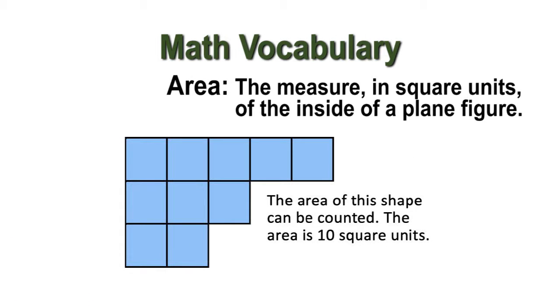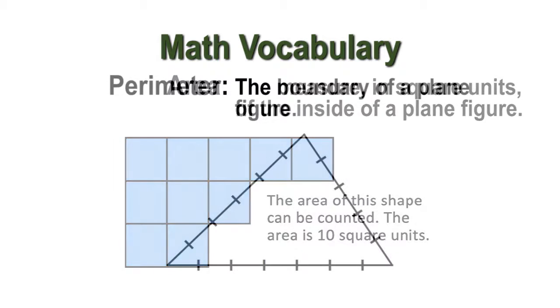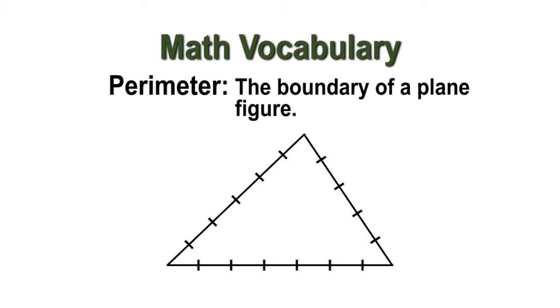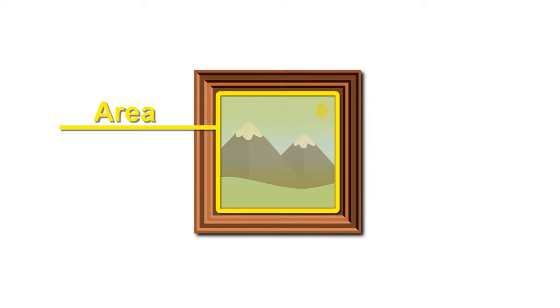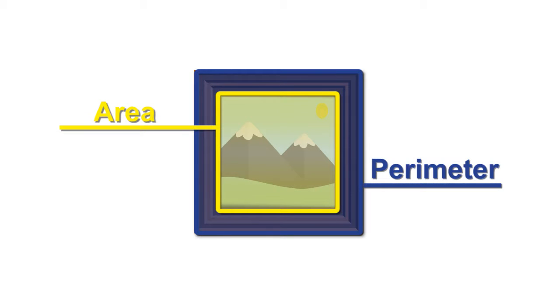Area is defined as the size of a surface and perimeter is the distance around a two-dimensional shape. Some teachers will use an example of a picture frame where the picture represents the area and the frame around represents the perimeter.